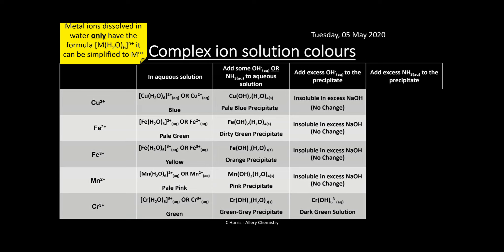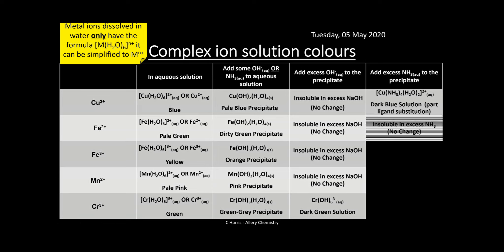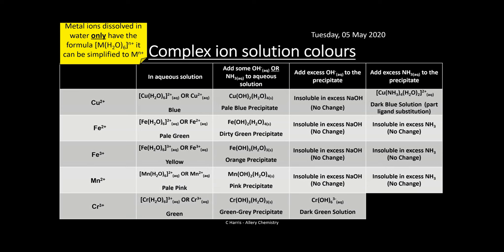Adding excess ammonia to the precipitate: copper gives a dark blue solution with partial ligand substitution - four ammonia ligands and two water ligands replace the OH and water, forming [Cu(NH₃)₄(H₂O)₂]²⁺, which is charged so it dissolves. Fe²⁺ is insoluble in excess ammonia - no change. Fe³⁺ - no change. Mn²⁺ - no change. Chromium³⁺ undergoes full ligand substitution, with all ligands replaced by six ammonia ligands forming [Cr(NH₃)₆]³⁺ - a 3+ charged purple solution.